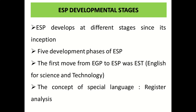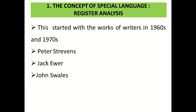We can list five development phases of ESP. The first move was from EGP — English for General Purposes — to ESP: English for Specific Purposes, beginning with EST: English for Science and Technology. The concept behind this was that of 'special language,' known as register analysis, starting with the works of writers in the 1960s and 1970s like Peter Stevens, Jack Ewer, and John Swales.